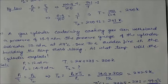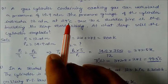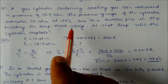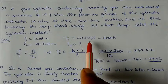Another problem: a gas cylinder containing cooking gas can withstand pressure of 14.9 atm. The pressure gauge indicates 12 atm at 27°C. Due to sudden fire in the building, temperature starts rising. At what temperature will the cylinder explode? P₁ = 12 atm, P₂ = 14.9 atm, T₁ = 27 + 273 = 300 K. T₂ = unknown.